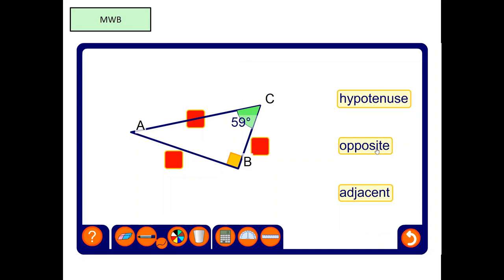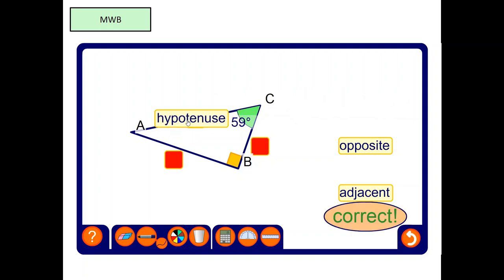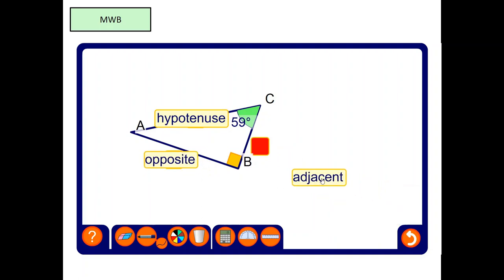I'll show you another example. So, firstly, the hypotenuse, which is opposite the right angle. There we go. Then, the side opposite the angle is the opposite. Woohoo. And finally, the last side left is the adjacent.